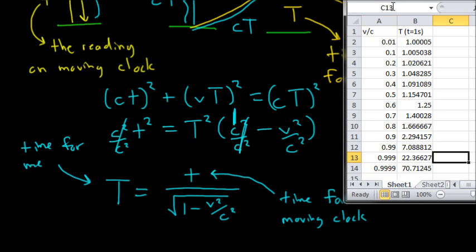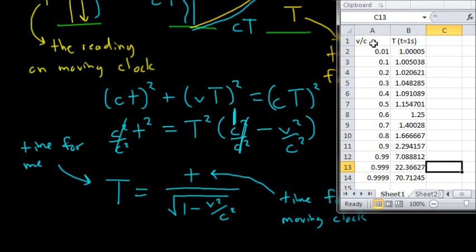And, I've made an Excel sheet that actually has some of these values. So, in this column, we have V over C. So, you can think of this as the percentage of the speed of light that we're going. And, this is the time capital T, the time it takes, how much time has elapsed for my clock when the moving clock has a reading of 1 second.